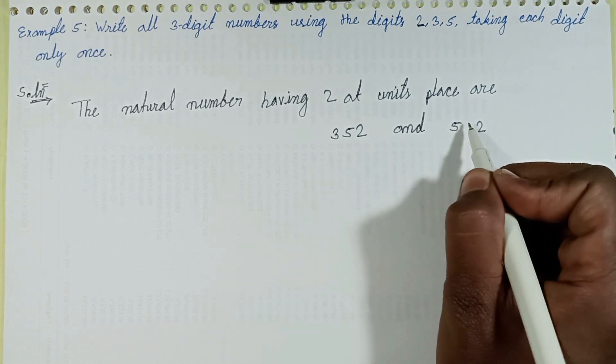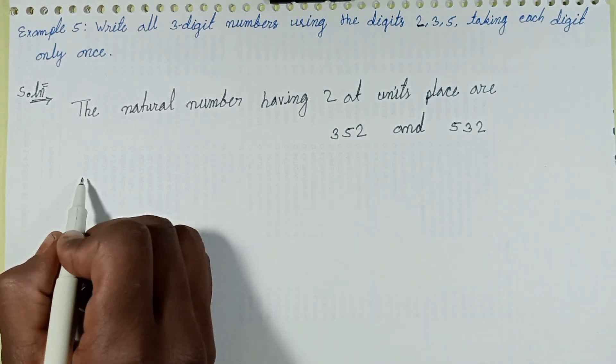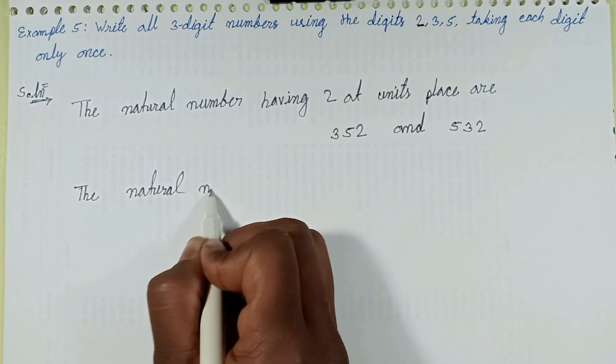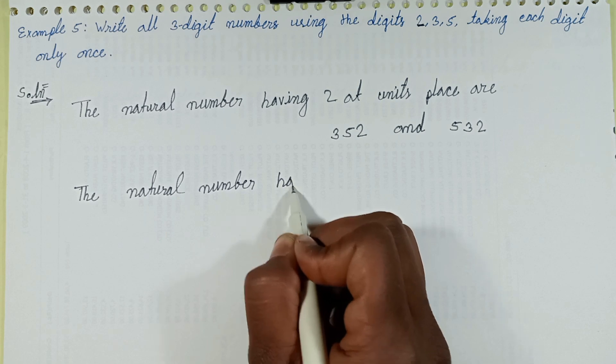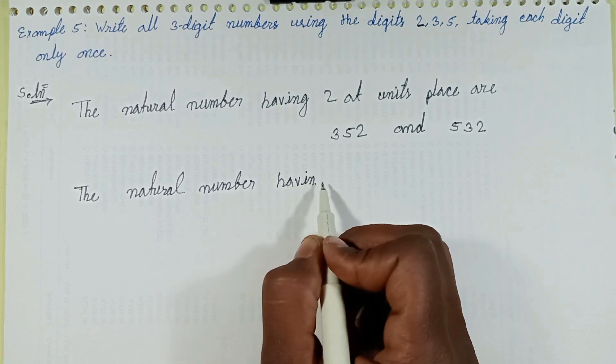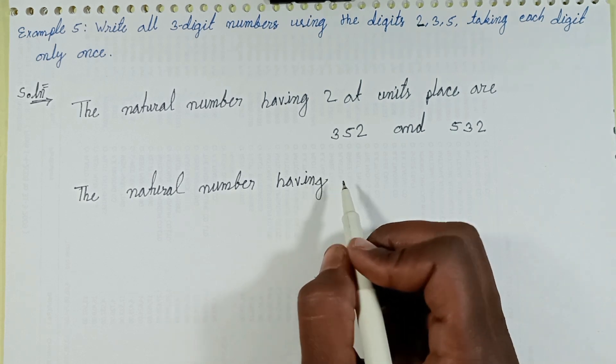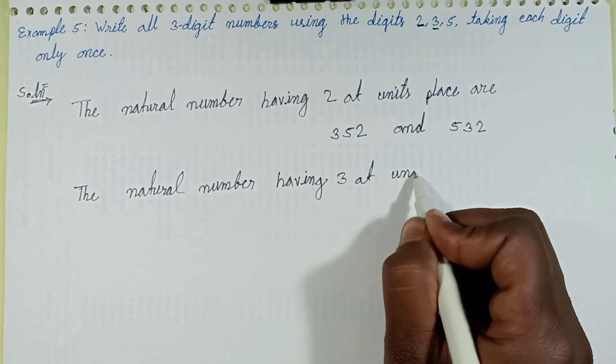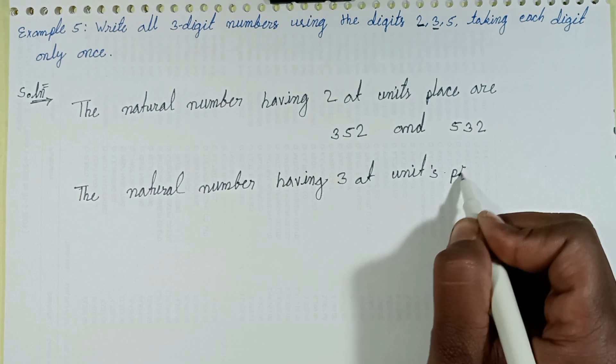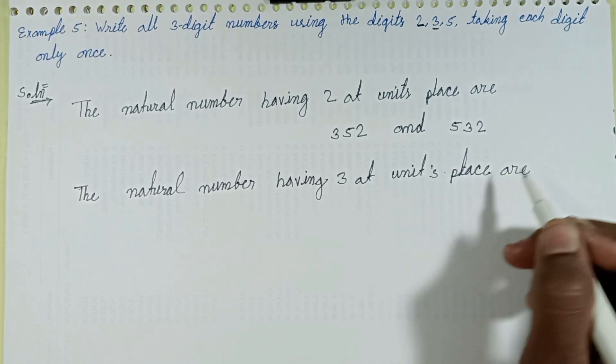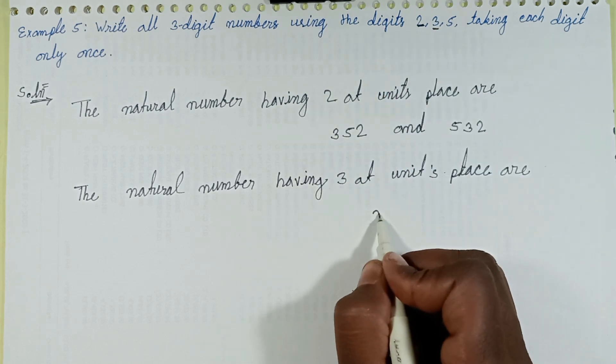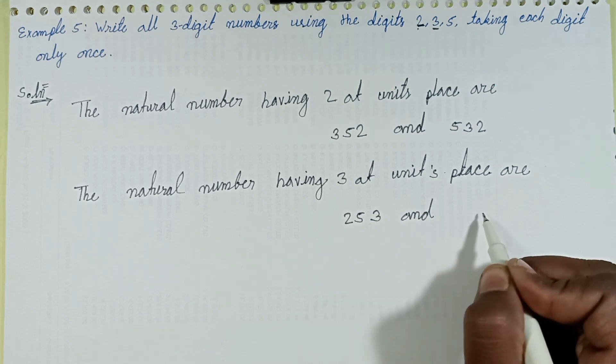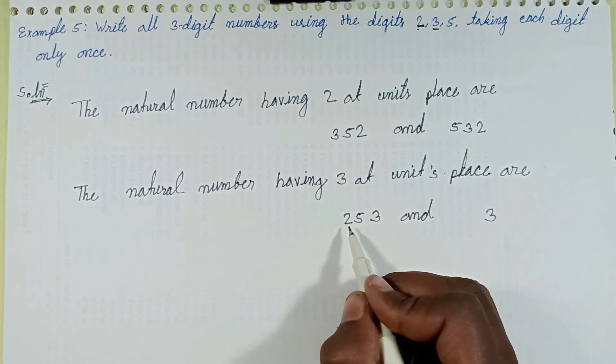Then next, the natural numbers having 3 at units place: first of all write down at the top 2 and 5, giving 253, and when 2 replaces with 5 and 5 replaces with 2, we get 523.